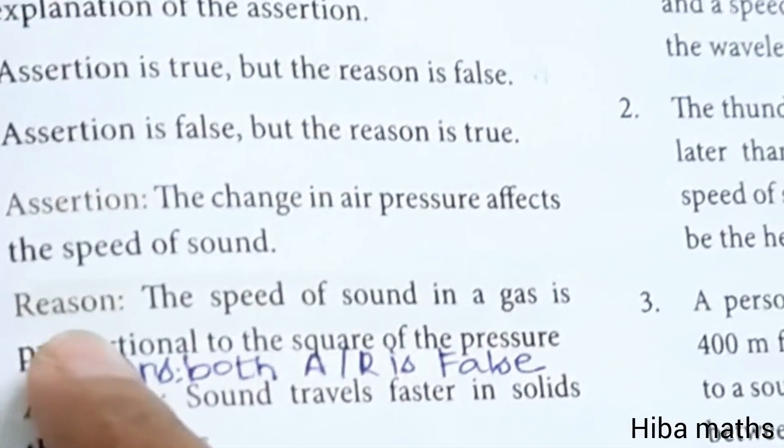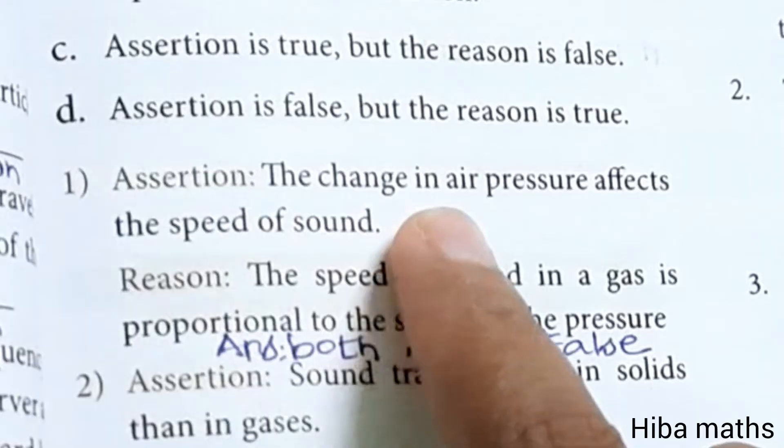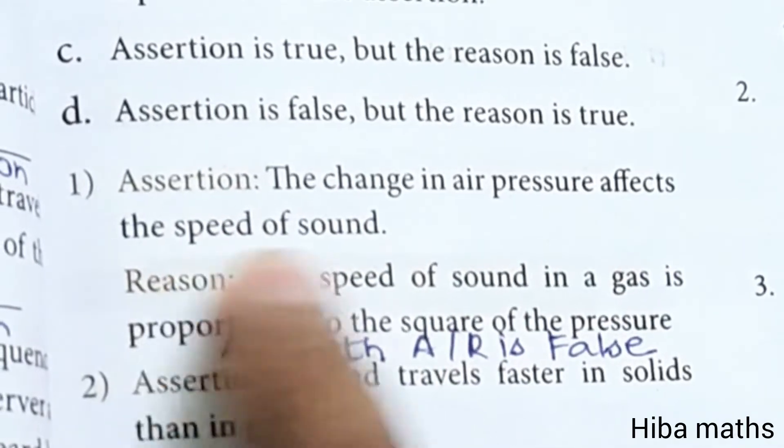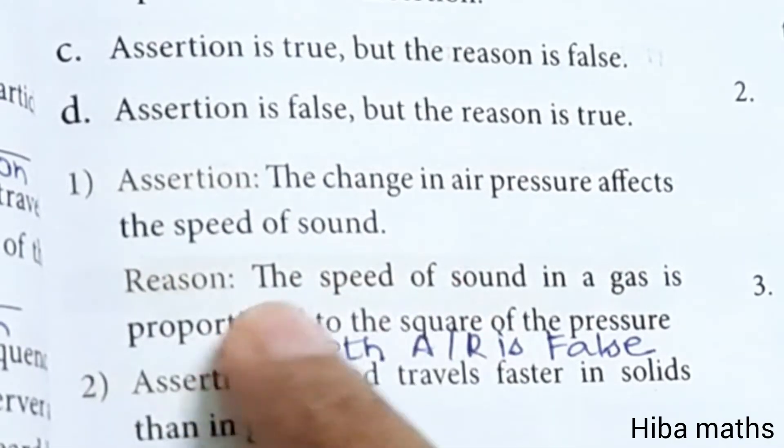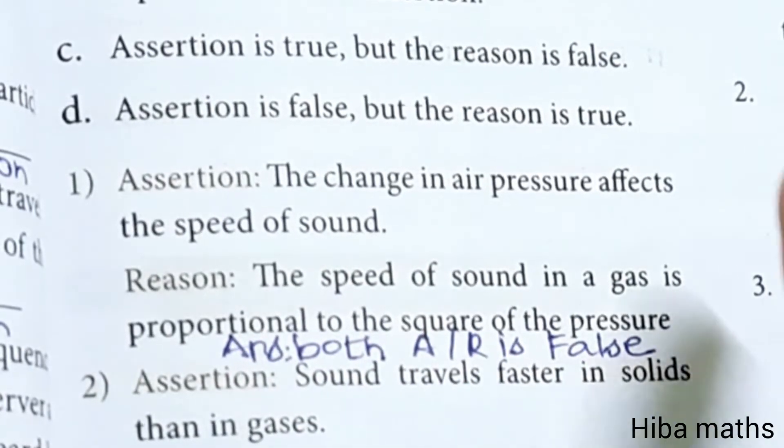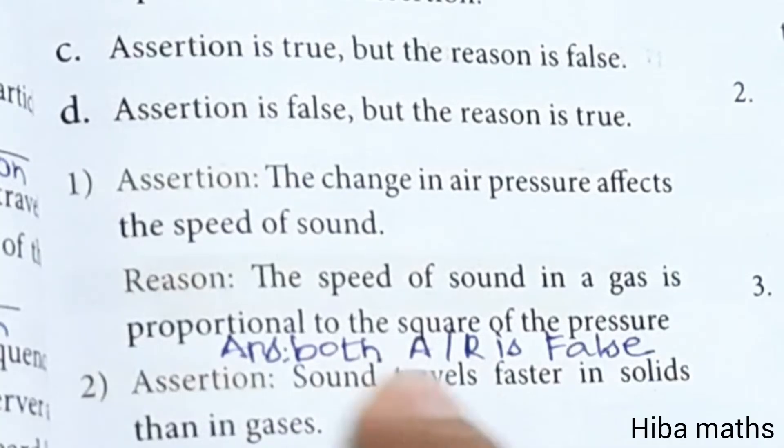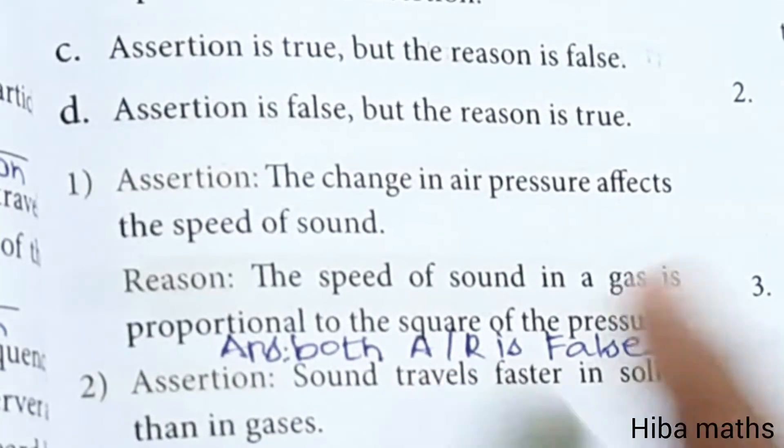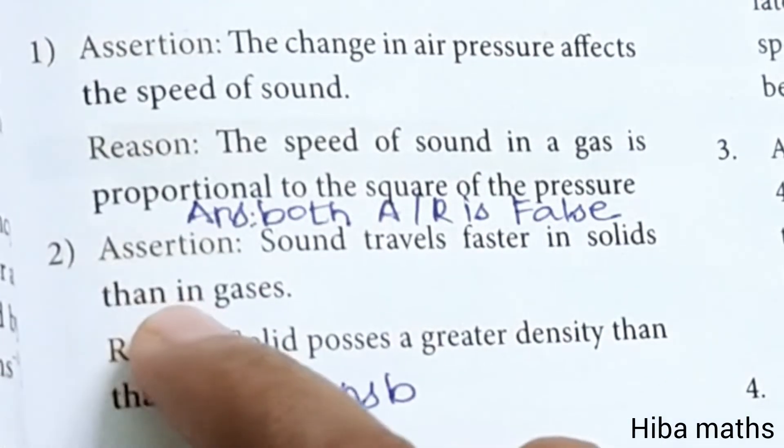Assertion and reason questions. Mark the correct choices. First question: the change in air pressure affects the speed of sound. Second: the speed of sound in a gas is proportional to the square of the pressure. So both assertion and reason are false.